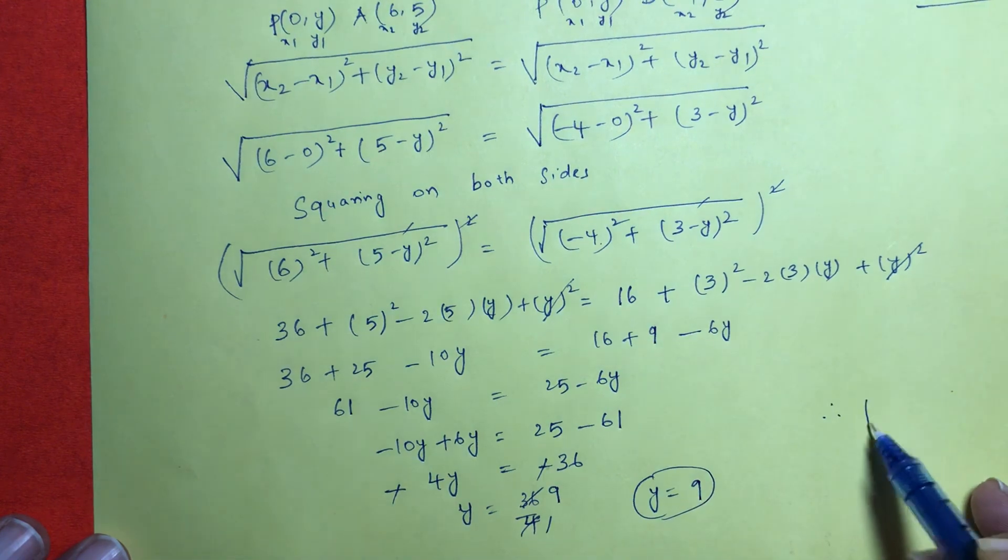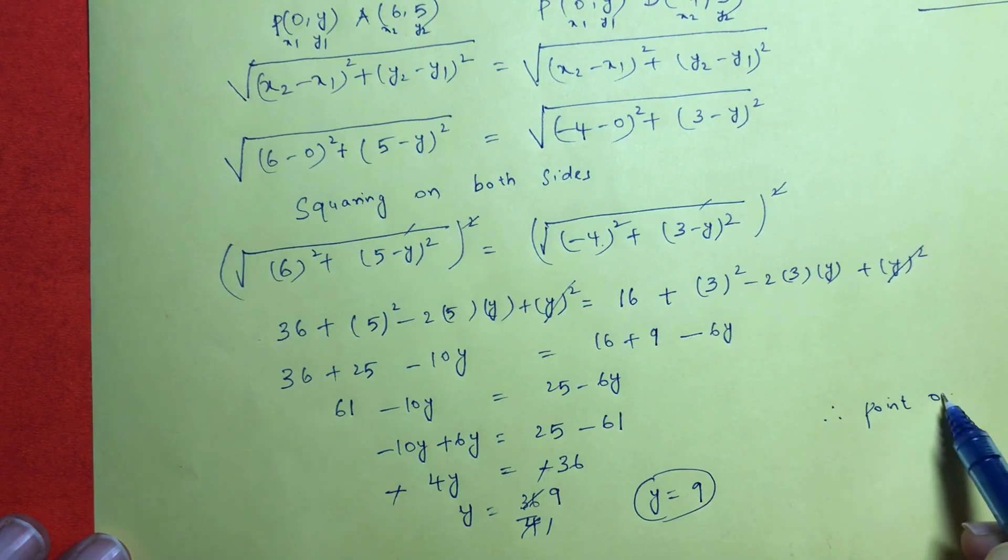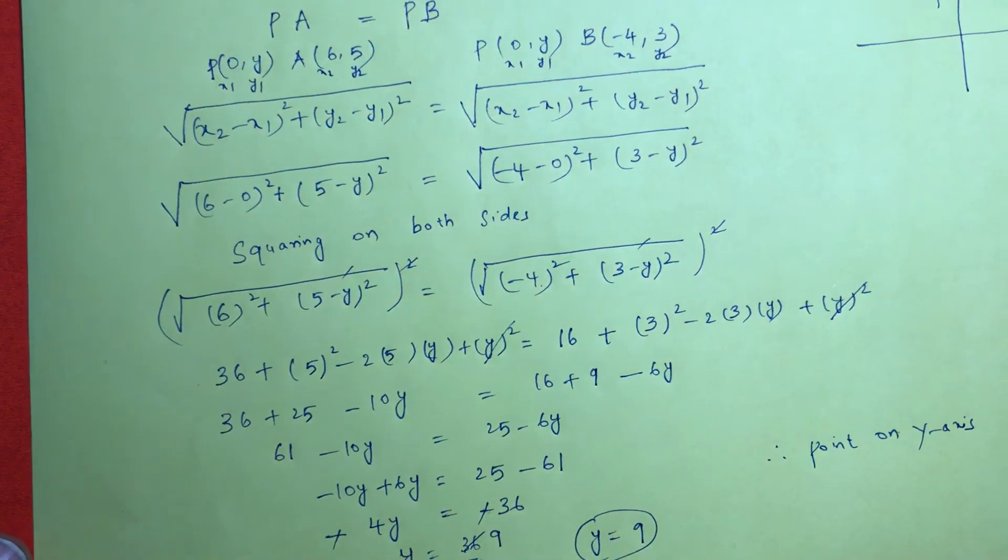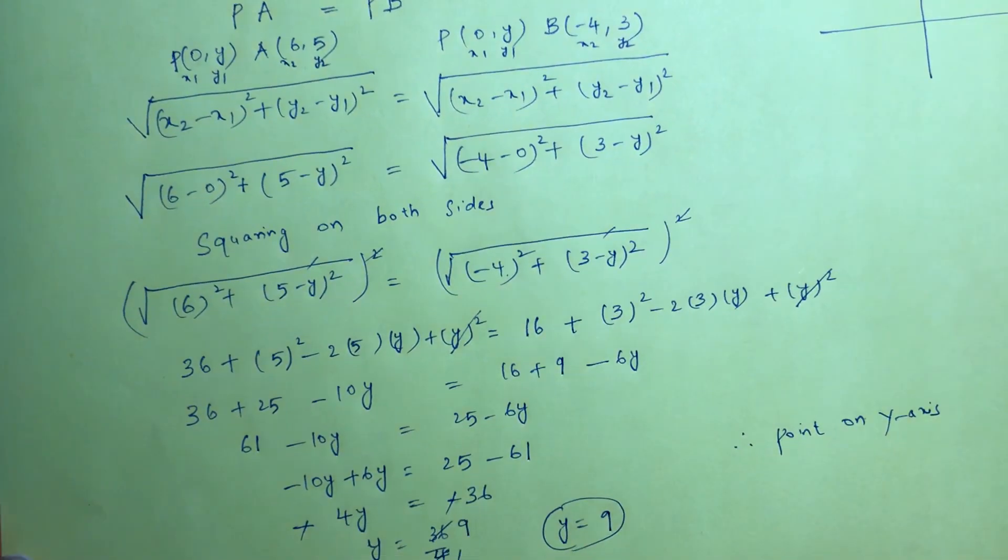Therefore the point on y-axis which is equidistant from A(6, 5) and B(-4, 3) is (0, 9).